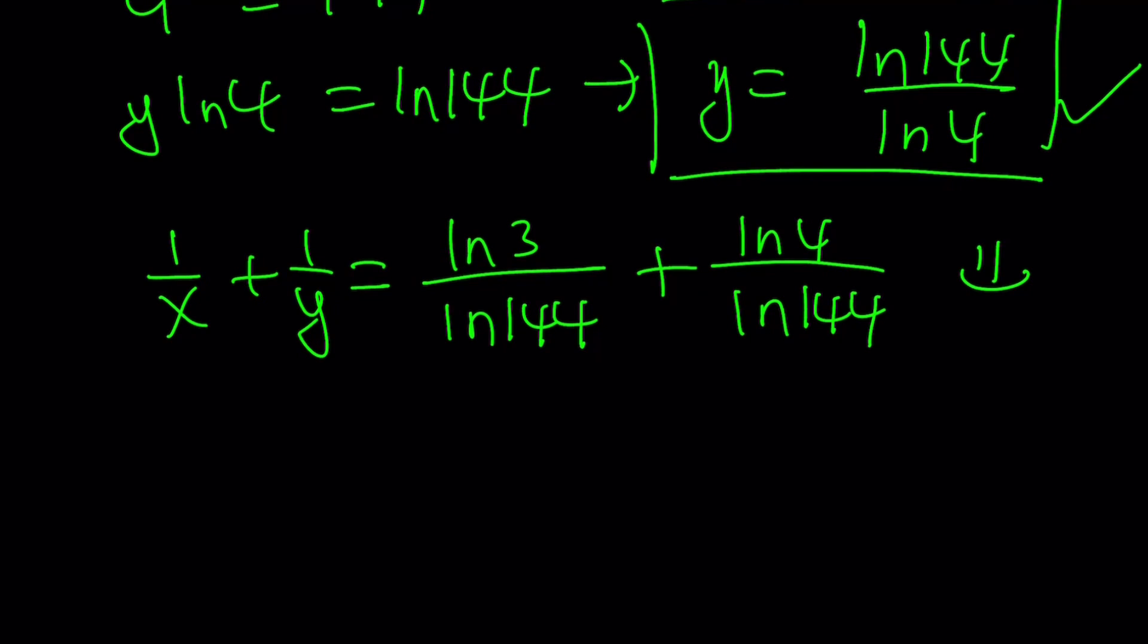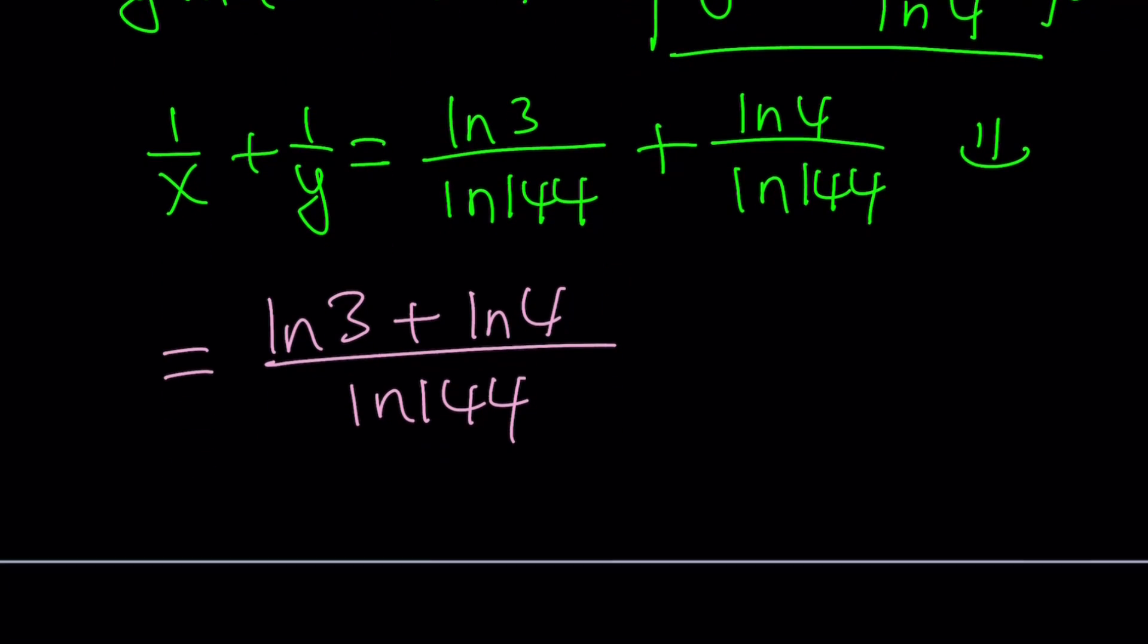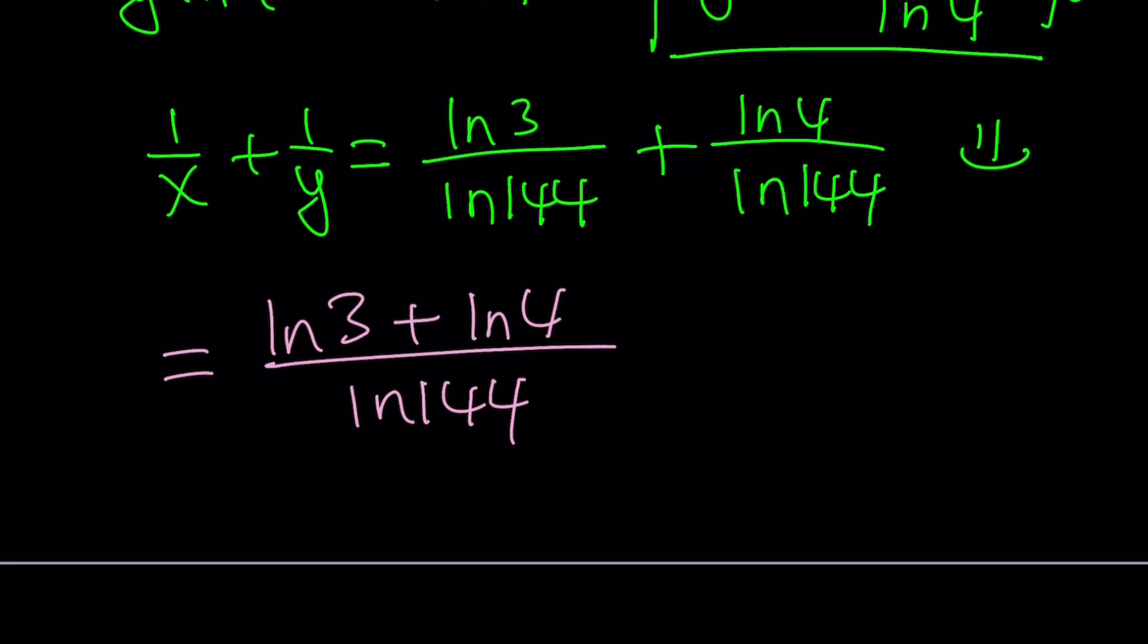So what we're looking for is 1 over x plus 1 over y. I can just go ahead and write this as ln 3 plus ln 4 over ln 144. So I wrote it with a common denominator. So what's so good about it? Well, first of all, we can condense the expression in the numerator.